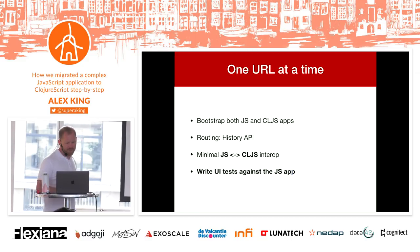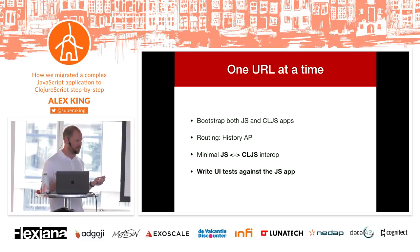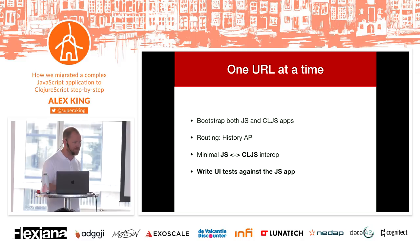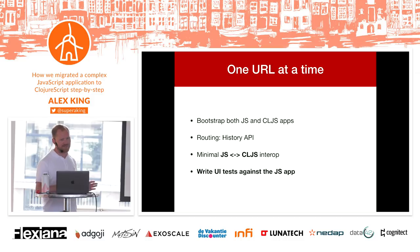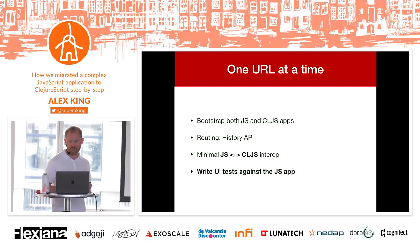To summarize: we'll bootstrap both apps, route with the history API, and do some interop where we need to — like calling the notification component from ClojureScript. We write UI tests against the JS app first. Tests were a problem — we don't have tests at the top of the pyramid. The idea is we write tests against the existing implementation, swap it out with ClojureScript, and the tests should pass. We won't test every variation since they'll be too slow, but we'll get decent coverage from some UI tests.